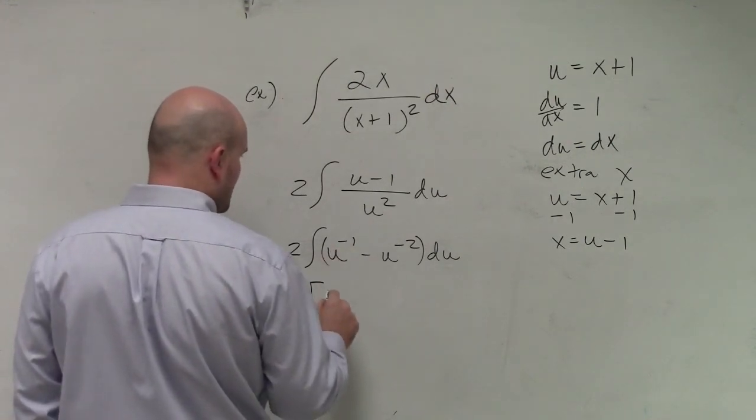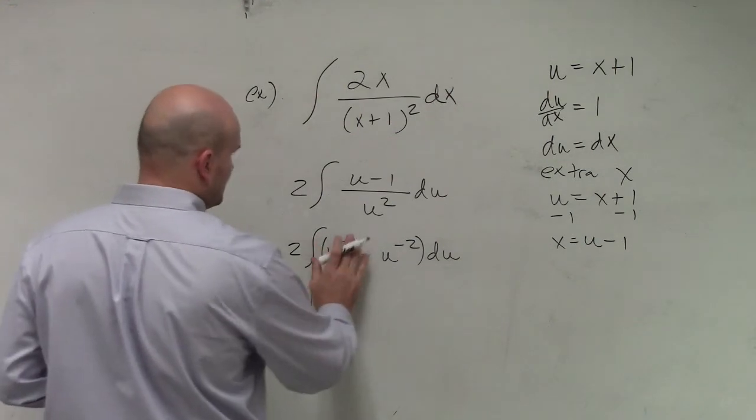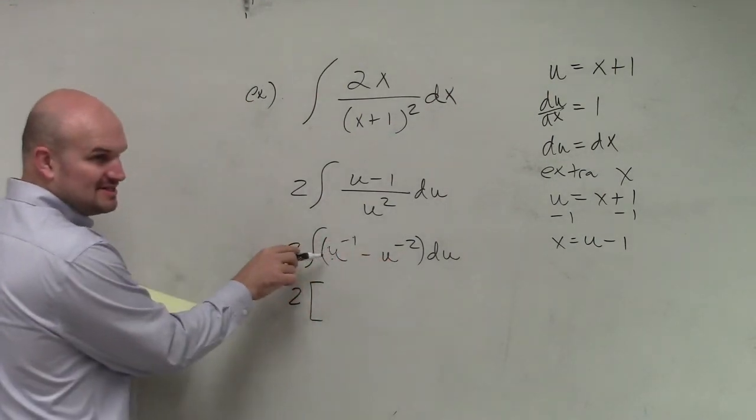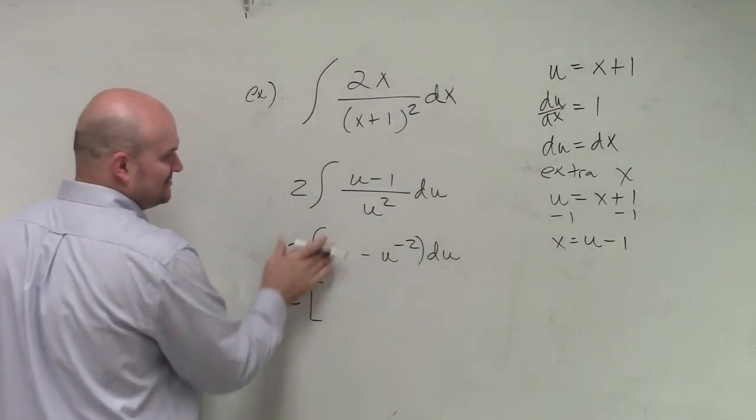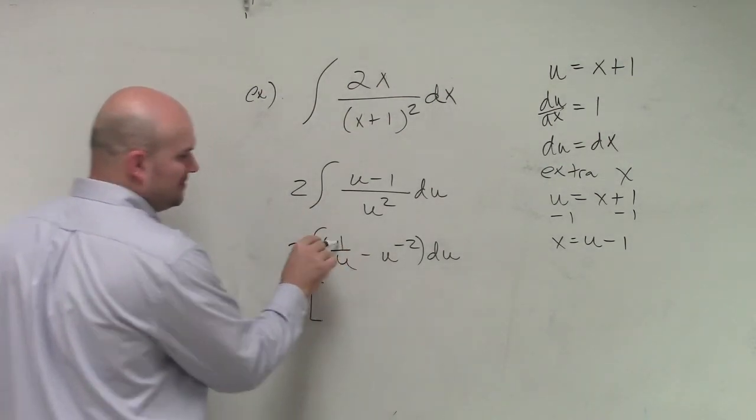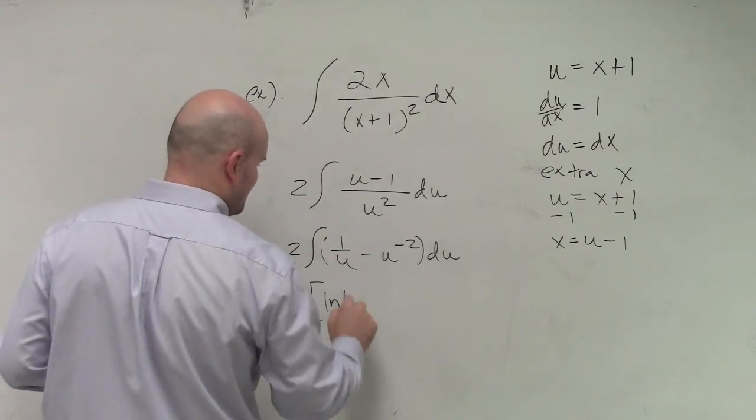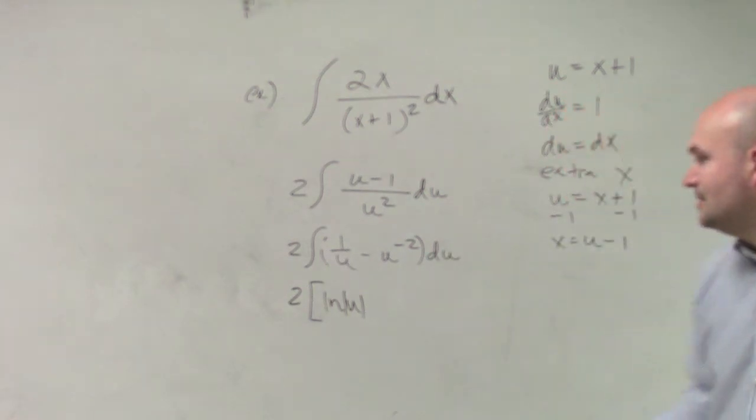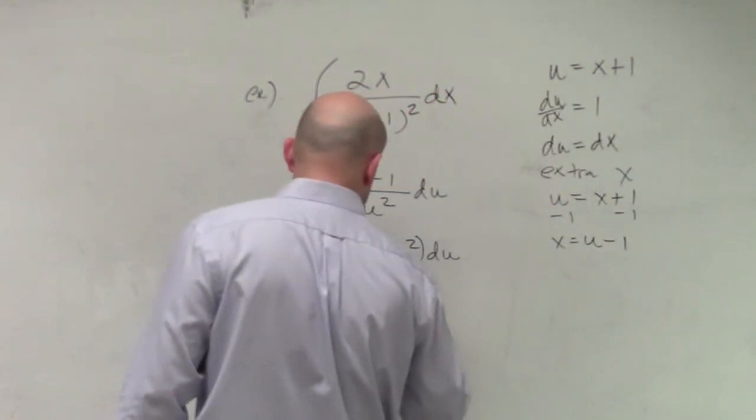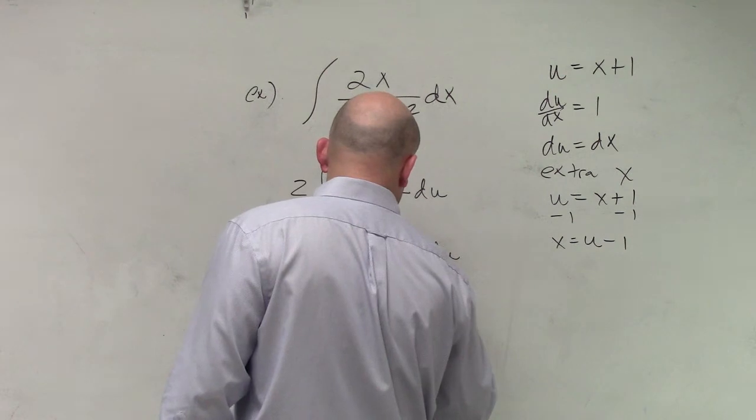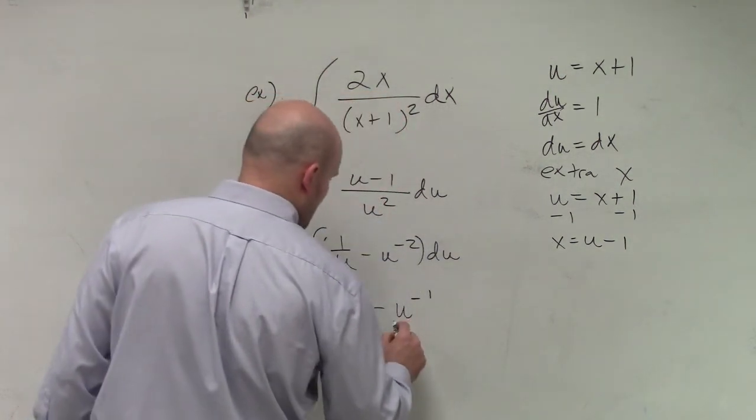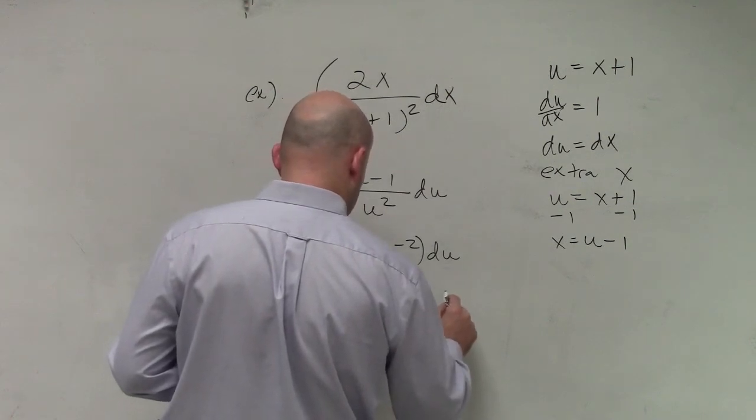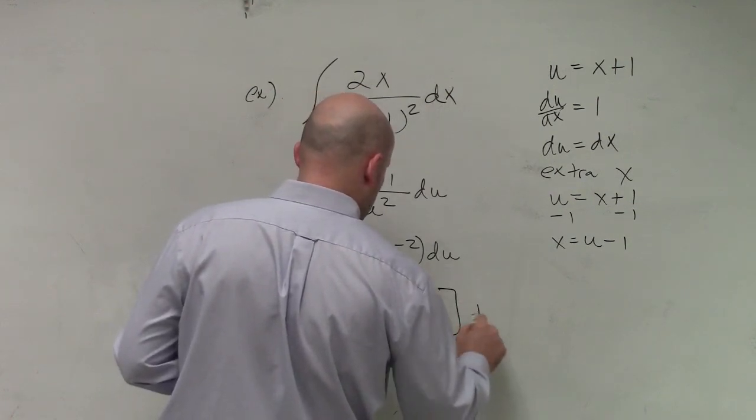So therefore, oh, I'm sorry. We can't do, this gives us an issue, right? So what you think about this, sorry. That's going to give us ln of u, right? The 1 over u, going to give you your ln of u. And then minus u to the negative 1 over negative 1 plus c.